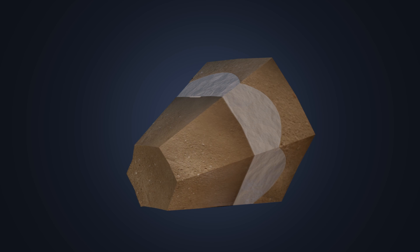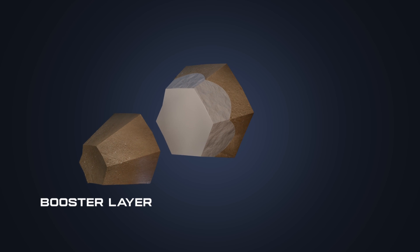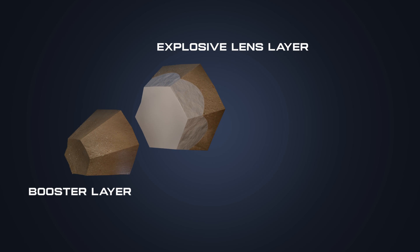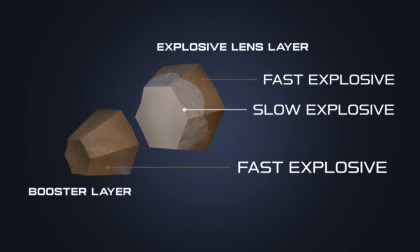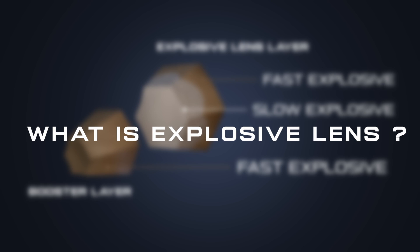It is divided into two layers, the inner booster layer and the outer explosive lens layer. The inner layer is made of only fast explosives, but outer layer is a combination of fast and slower explosives. So, what is explosive lens and why it is so important?